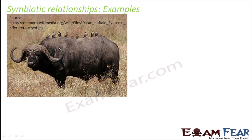Let us look at the example of the buffalo and the crow. What kind of relationship exists here? The crows sitting on the buffalo are eating up the tiny ants and aphids present on the skin of the buffalo. The buffalo's skin is generally very untidy with a lot of insects on it. The crow is getting its food, and the buffalo is getting benefited because somebody is cleaning up its body. Again, this is an example of symbiosis.